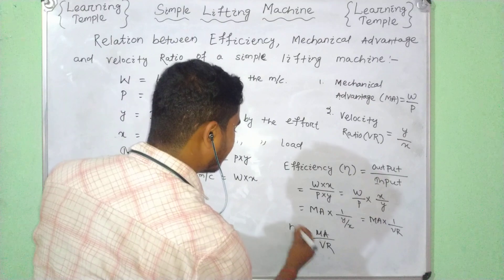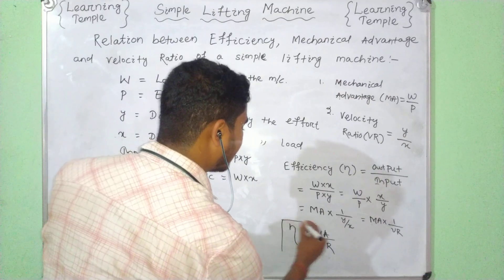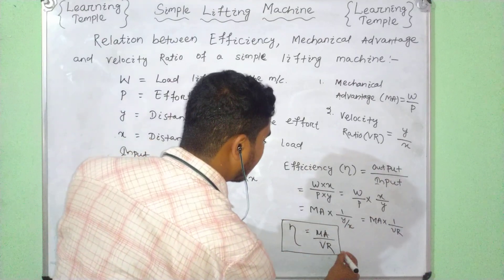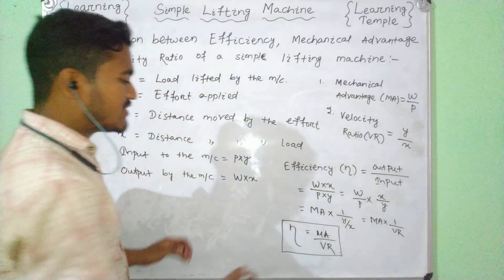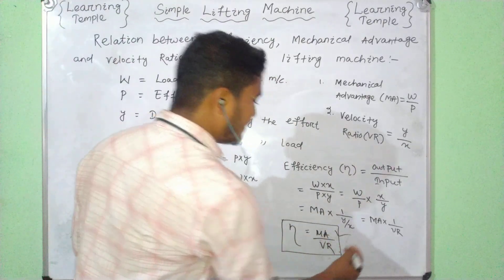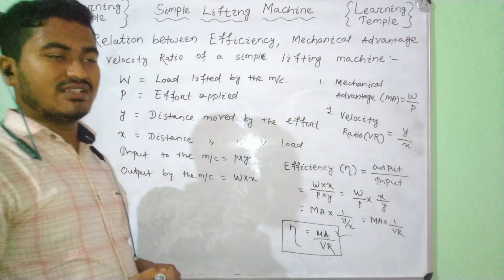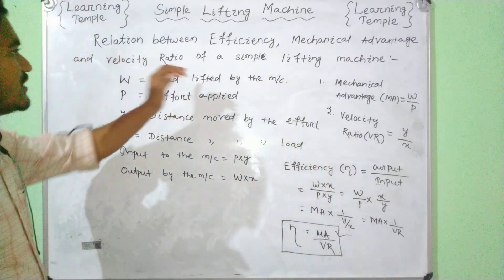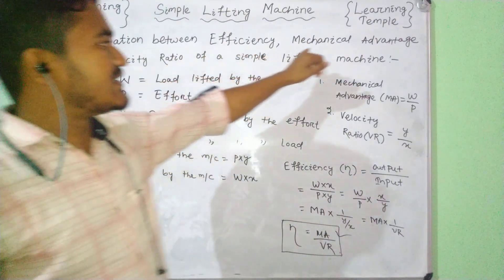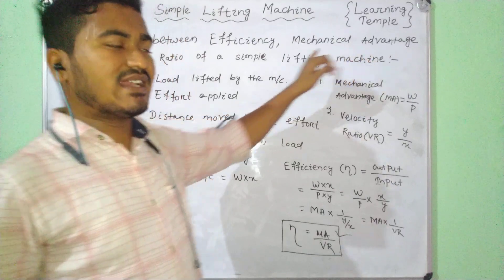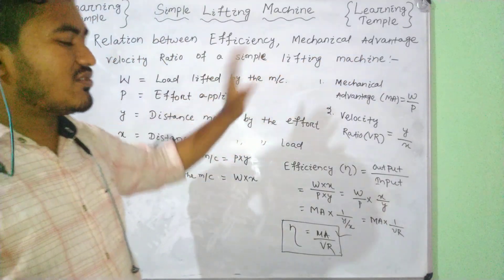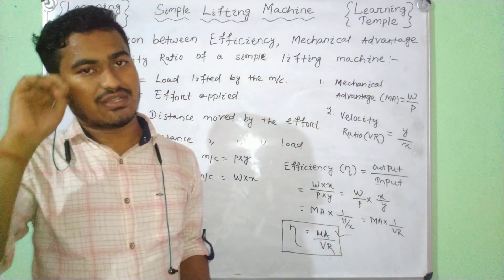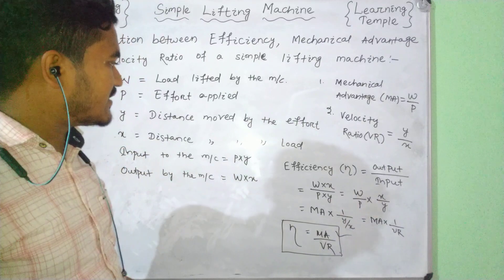So, this is mechanical advantage and this is velocity ratio. We can relate efficiency with mechanical advantage and velocity ratio of a simple lifting machine.